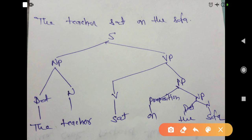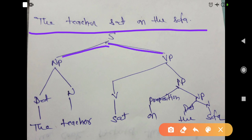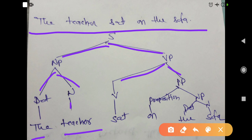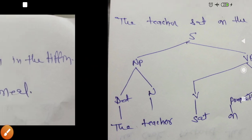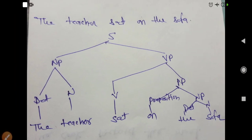'The teacher sat on the sofa.' This sentence can be divided into NP and VP. The noun phrase: 'the' is the determiner and 'teacher' is the noun. The verb phrase: 'sat' is the verb, 'on' is the preposition, and 'on the sofa' is used as a prepositional phrase. Within that, 'the' is the determiner and 'sofa' is the noun. This way you can divide the sentence and make a tree diagram accordingly.